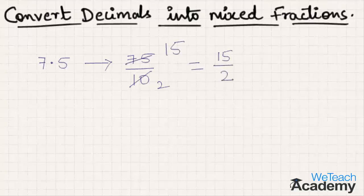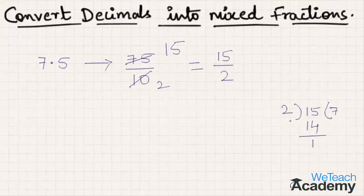Now let us simplify this by dividing the numerator by denominator. Here 2 times 7 is 14, and 15 minus 14 is 1. Hence 7 1 by 2 is the mixed fraction form for 7.5.